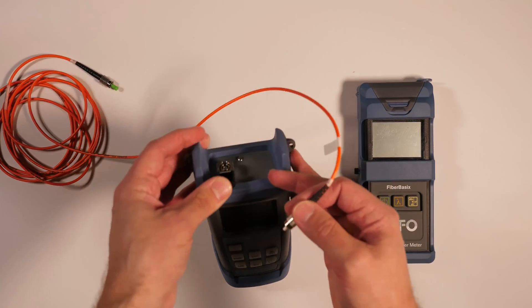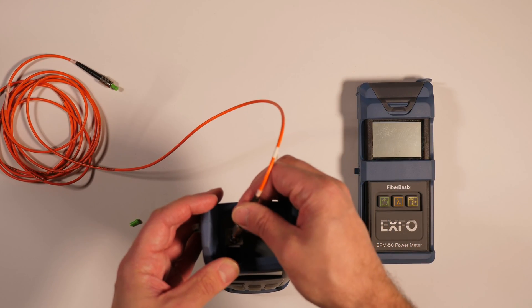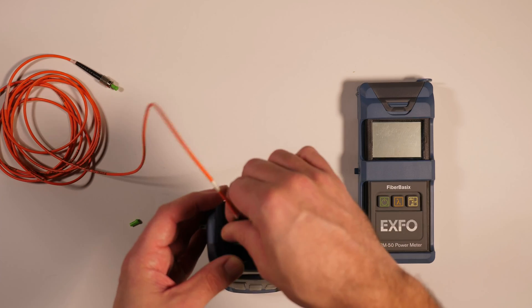Connect the fiber to be tested to the FLS 600's output port. Make sure the connection is secure.